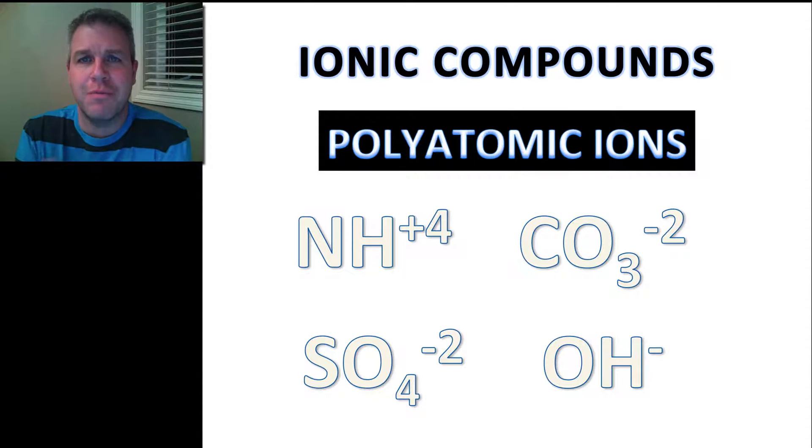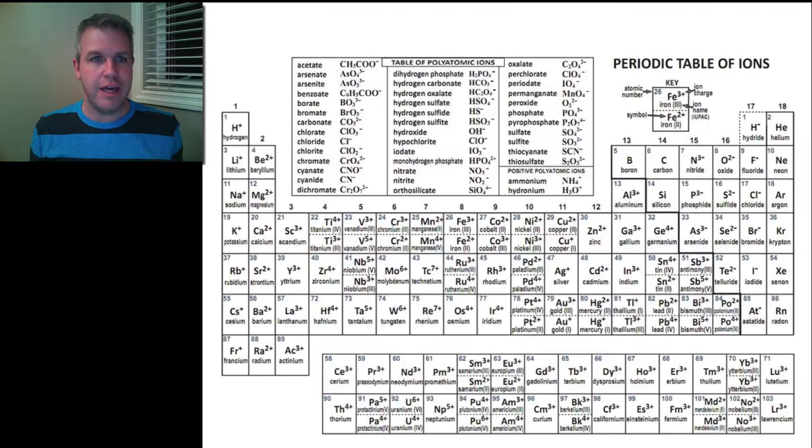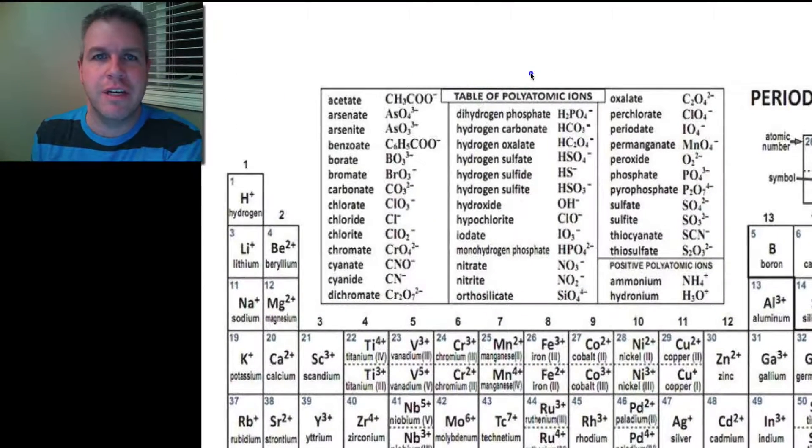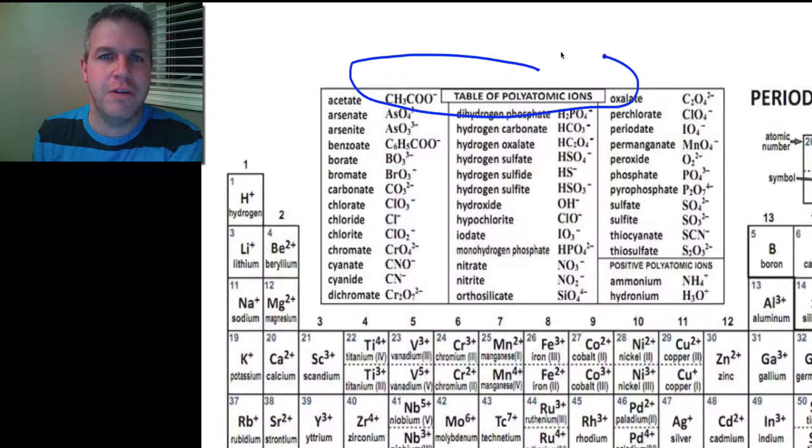I have four of them as examples here. You treat them exactly the same as any other ion. There is on your periodic table a chart, and this periodic table is the one that I've been using here on our videos. But any periodic table of ions should have a table of polyatomic ions listed.